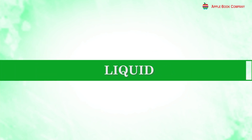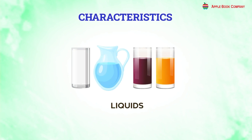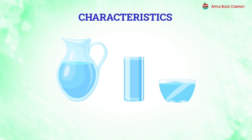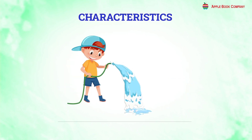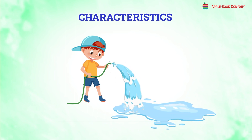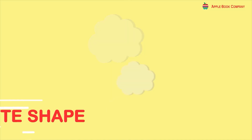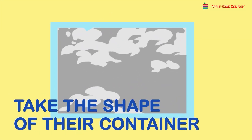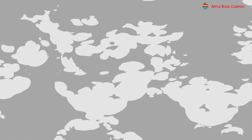Liquid: Let us understand the characteristics of liquids. Liquids do not have any definite shape or size of their own. They take the shape of the container in which they are kept. Liquids can spill and flow.